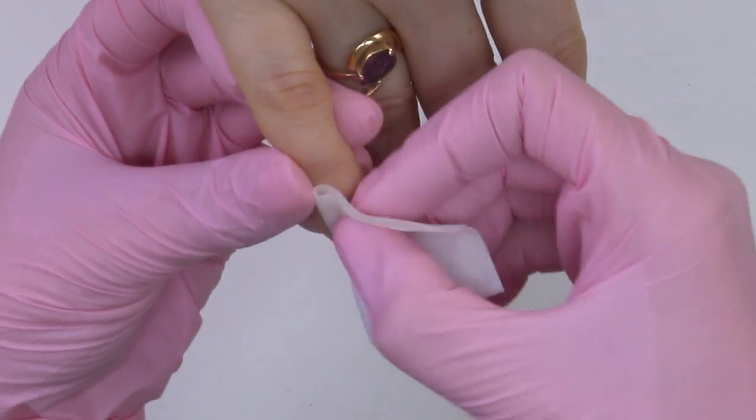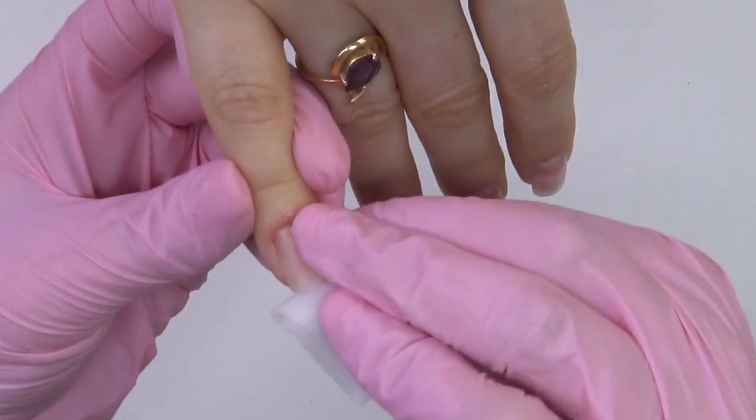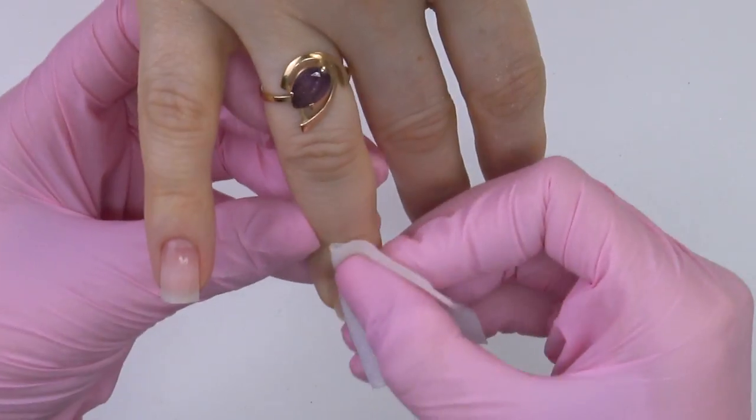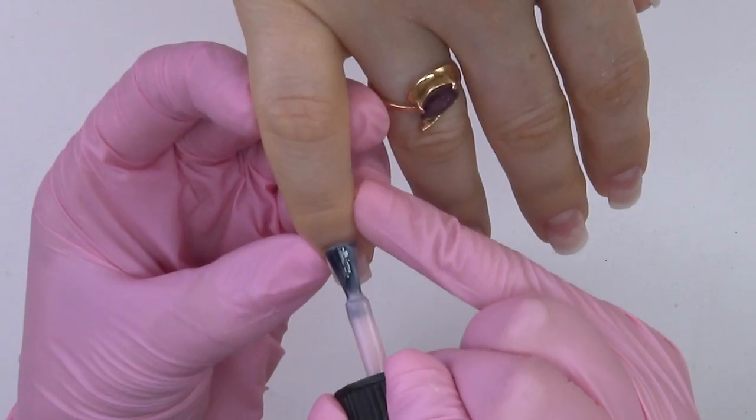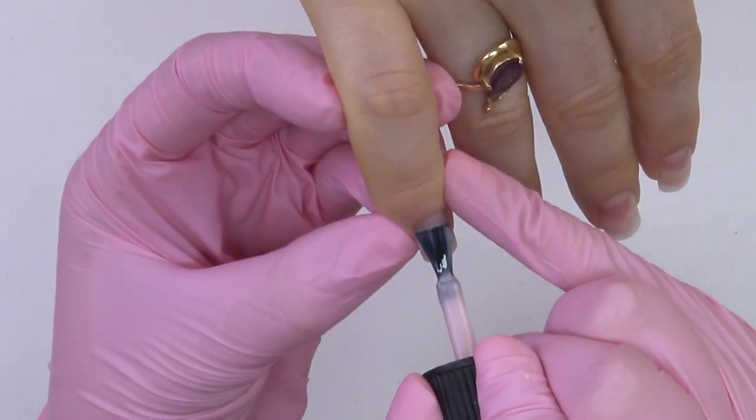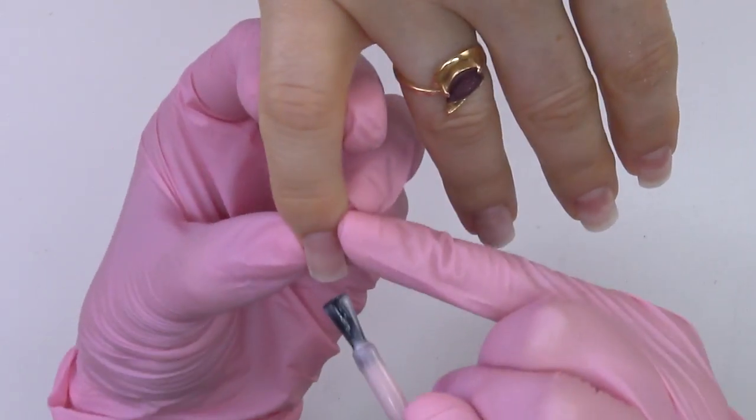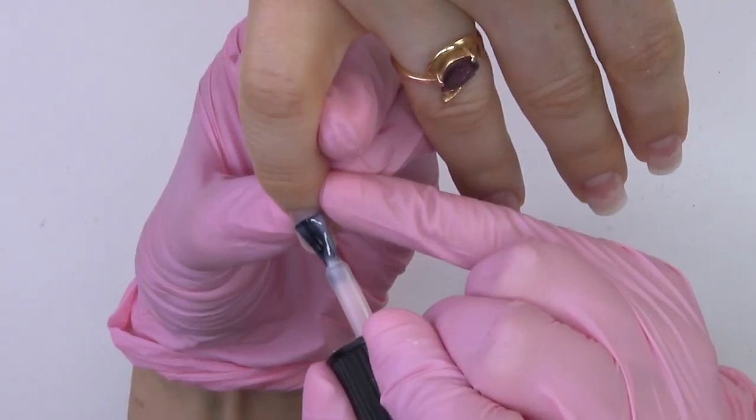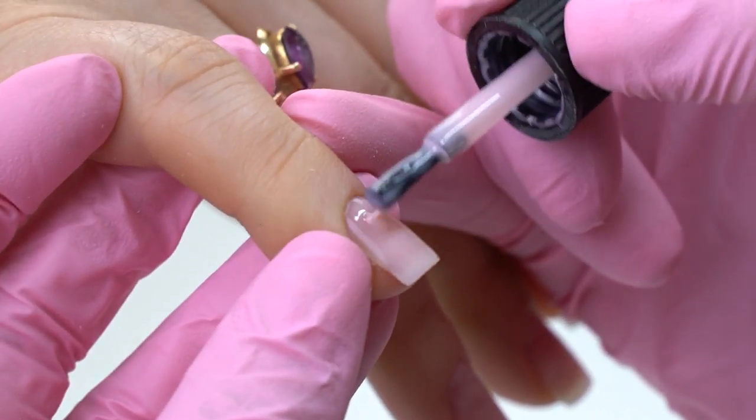I degrease the nail plate and move on to the aligning part. I will be using a medium density self-aligning base coat. I apply most of it near the cuticle and almost none on the free edge, since there is already hard acrygel.